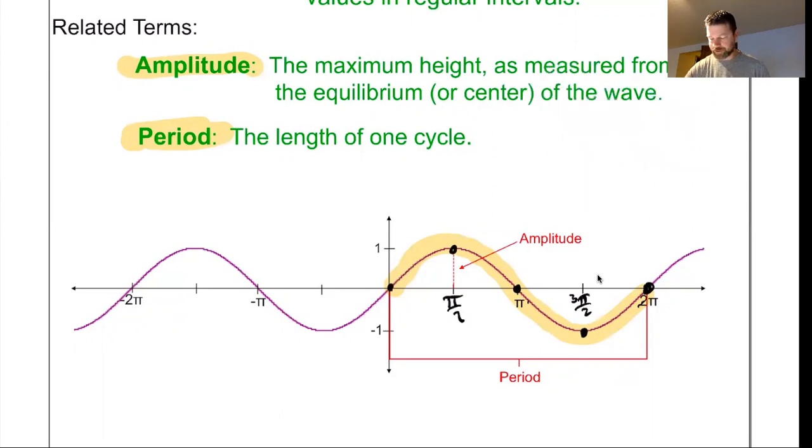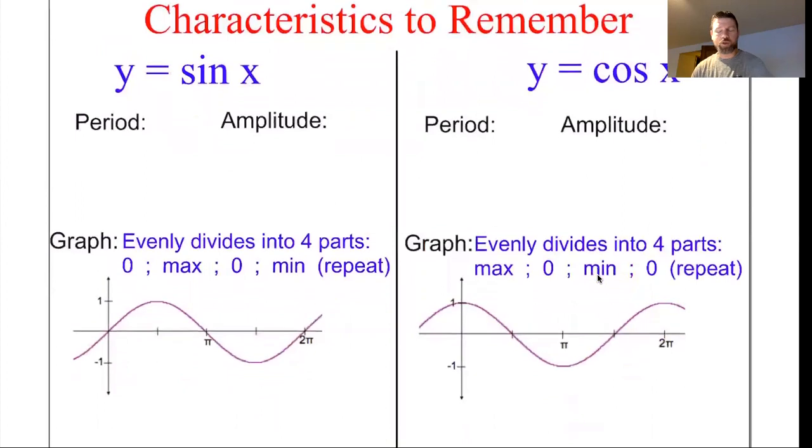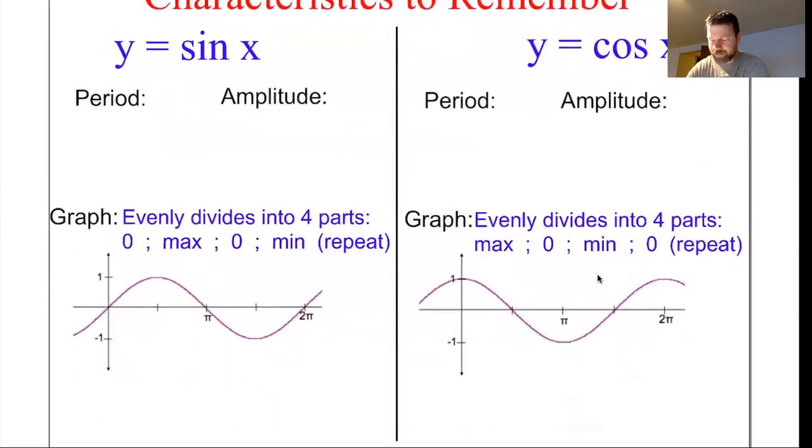All right, let's start doing a few functions. Characteristics to remember. So with sine of x, we already kind of talked about that one. Sine of x, the period is 2π. It has an amplitude of 1. And one of the big things to help remember sine is that it's kind of evenly divided into four parts. Sine starts at 0 and goes up to 1, and back down to 0 and down to negative 1. And then those values just repeat.